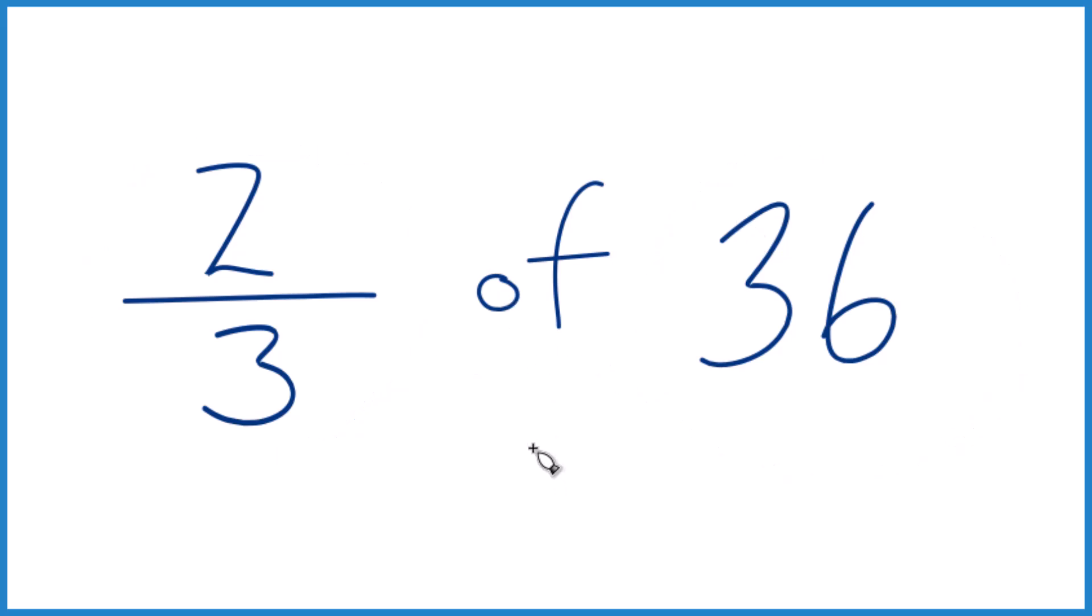So whenever you see 'of,' instead of 'of' we want to think multiplication. So we want two-thirds times 36. It's the same thing as two-thirds of 36.